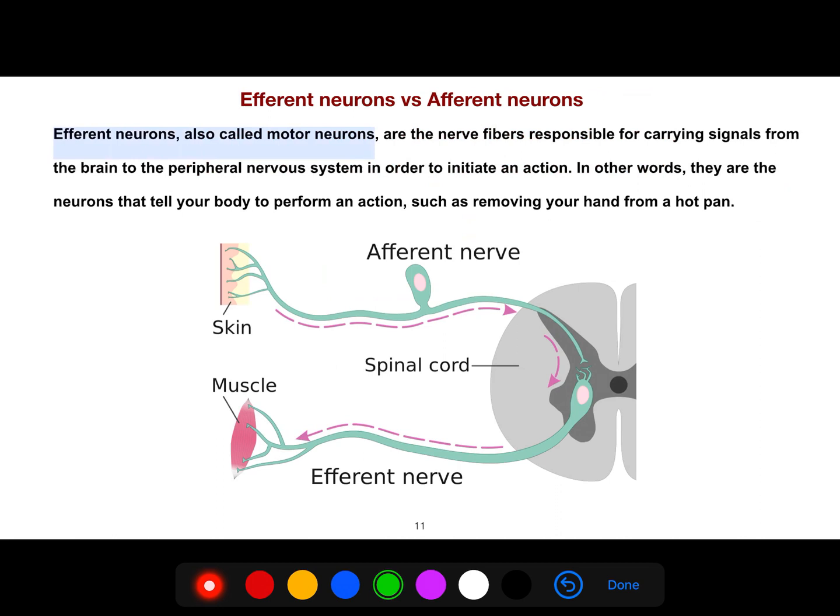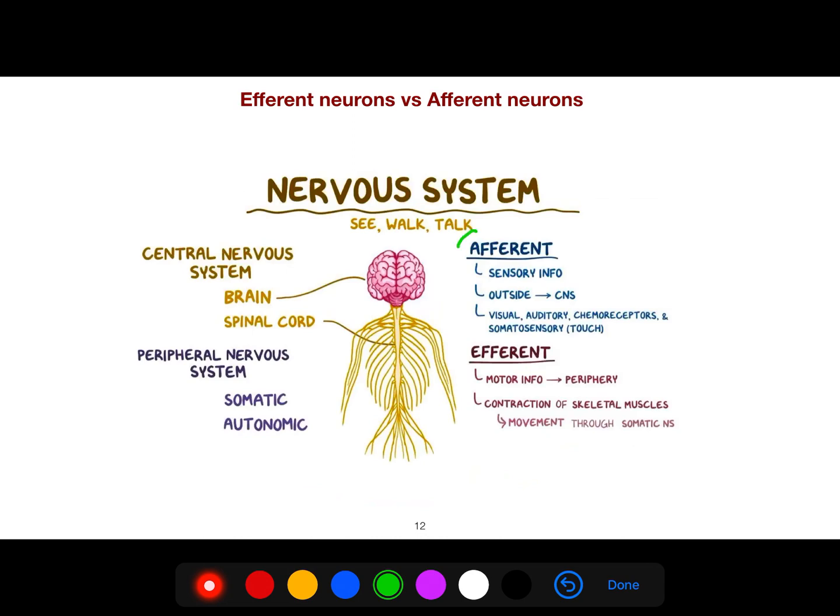You should know what are efferent neurons and what are afferent neurons. Efferent neurons are motor neurons. They are nerve fibers responsible for carrying signals from the brain to the nervous system in this direction to initiate an action. In other words, they are the neurons that tell your body to perform an action, such as removing your hand from a hot pan. We have afferent neurons and efferent neurons. Efferent neurons for motor, but afferent is for sensory information.